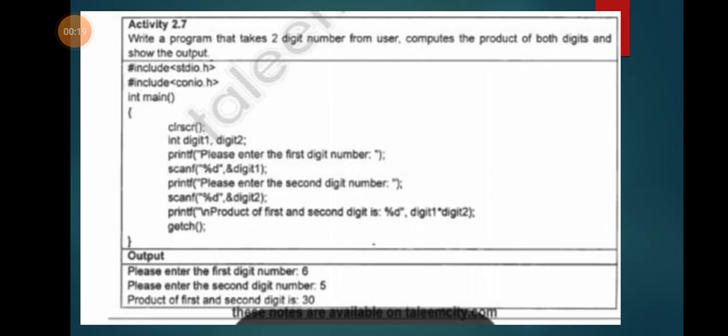Activity 2.7: Write a program that takes two digit numbers from user, computes the product of both digits, and shows the output.